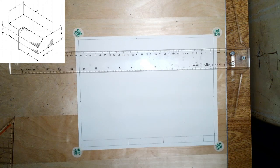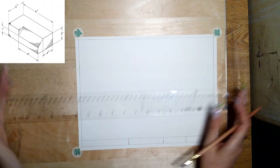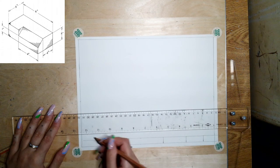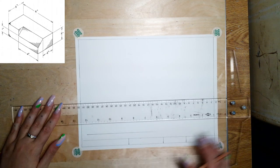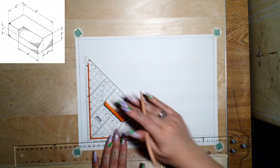Okay, and now that I've got my border and my title block laid out, I'm just going to pick a place to start my front view and just kind of draw a guideline out and a guideline up.